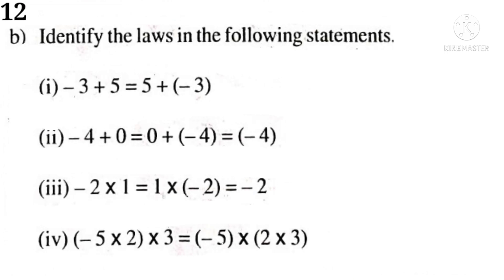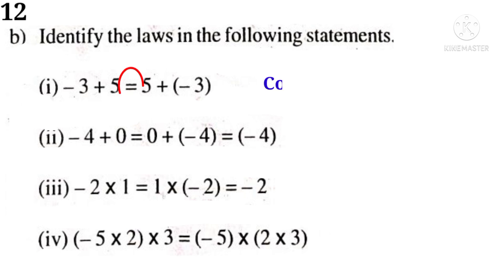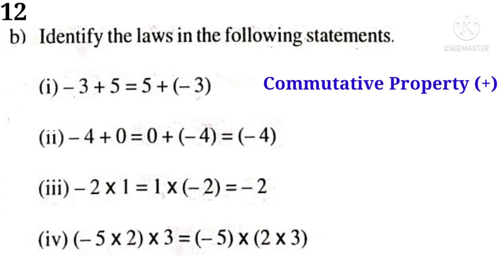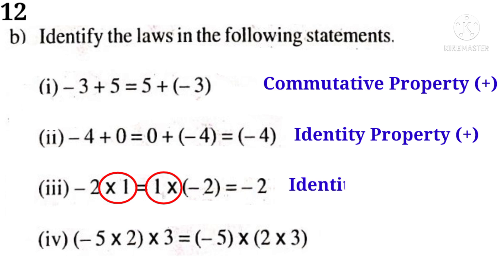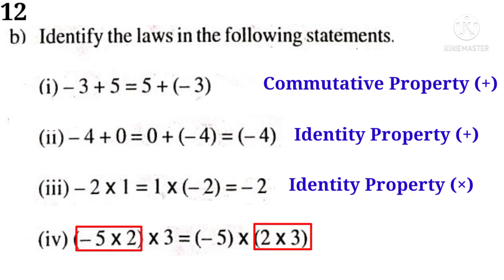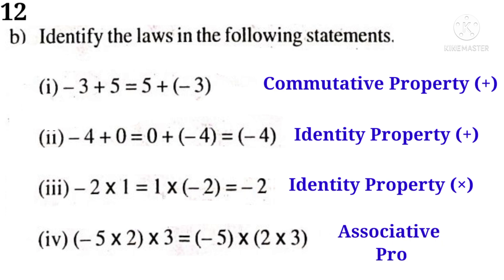Now, 12b. Identify the laws in the following statements. Solution 1: minus 3 plus 5 equals 5 plus minus 3 — the numbers on LHS and RHS are the same. So, it is the commutative property under addition. Solution 2: 0 is added and the same number minus 4 is the result. So, it is the identity property under addition. Solution 3: minus 2 multiplied by 1 gives the same number minus 2. So, 1 is the identity property under multiplication. Solution 4: only the bracket is changed but the product is equal. So, it is the associative property under multiplication.